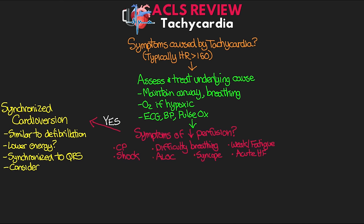We do want to consider sedation if our patients are able to tolerate it. Unfortunately, if they're unstable, they're often not going to have an adequate blood pressure to support adding a sedative, so please keep in mind that this is quite painful for the patient. That said, if the patient does have a narrow and regular QRS complex — think SVT — then we can consider giving adenosine. Our dose is going to be 6 mg rapid IV push, and we can give two subsequent doses of 12 mg. It's really important to get this medication in very quickly, so we'll often set up a three-way stopcock where we can give the medication and immediately follow it up with a 10 ml flush.